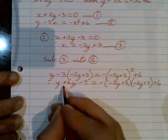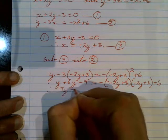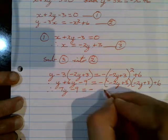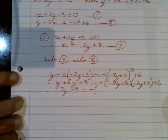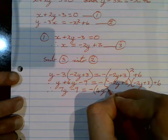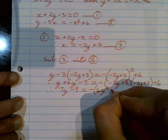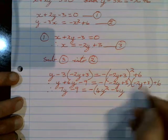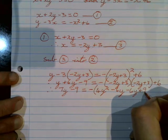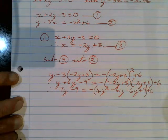On the left side we can simplify: y plus 6y is 7y, and then we've got our minus 9. On the right side we have to multiply out the two brackets, with the minus sign staying outside for now. Minus 2y times minus 2y is 4y squared. Then 3 times minus 2y is minus 6y, and minus 2y times 3 is another minus 6y, then plus 3 times plus 3 is plus 9. Close the bracket, and the plus 6 is on the outside.